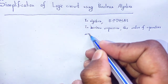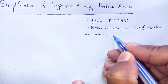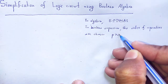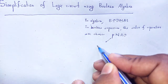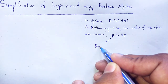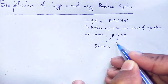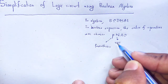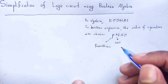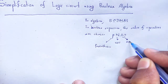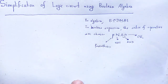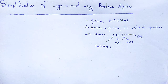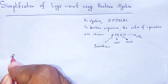In a similar pattern in Boolean algebra, the order of operators — AND, OR, NOT — are chosen. The rule used is P-N-A-O: P stands for Parentheses, N stands for NOT (complement), A stands for AND, and O stands for OR. In this order, we solve any kind of Boolean expression.